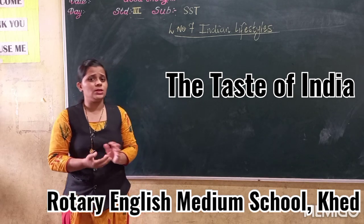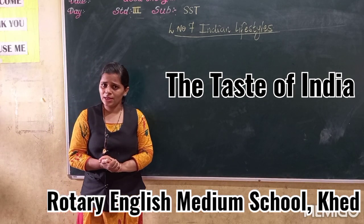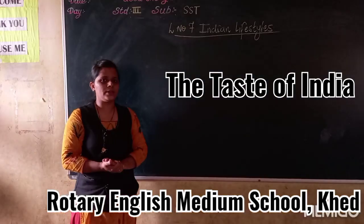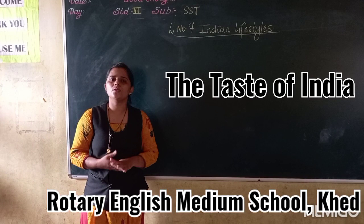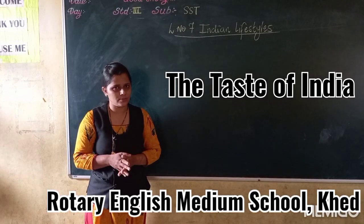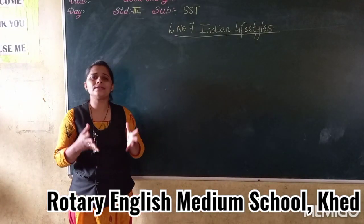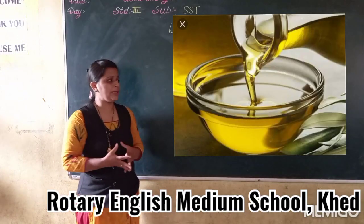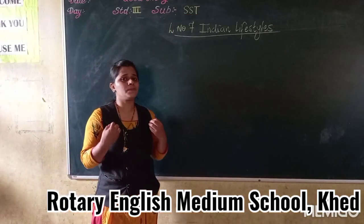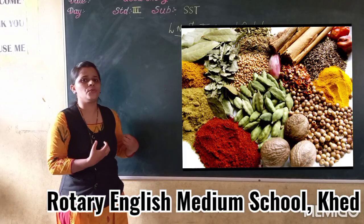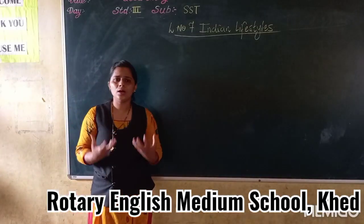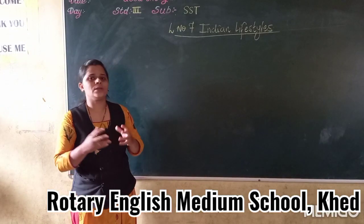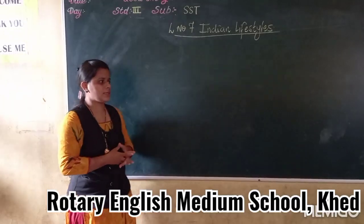The food we eat has a different taste. Just as an example, the food your mother cooks and the food your friend's mother cooks have two different tastes. So why does this happen? Because the quantity of oil and the spices used in the food gives it a different taste. So let's discuss today about the spices.